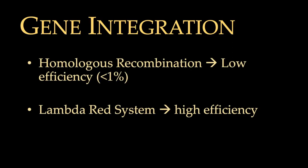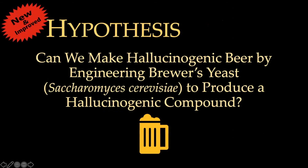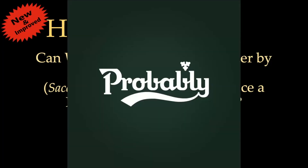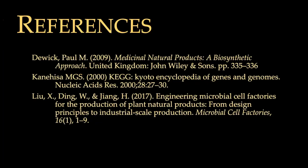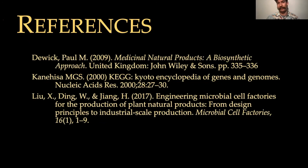To integrate the genes we can use homologous recombination, though it has less than 1% efficiency, or the more efficient lambda red system. So — can we make hallucinogenic beer by engineering brewer's yeast to produce a hallucinogenic compound? Probably. There'd likely be some mescaline present. I hope you learned something about synthetic biology, using enzyme databases and pathways to build molecules. This was for educational purposes only.